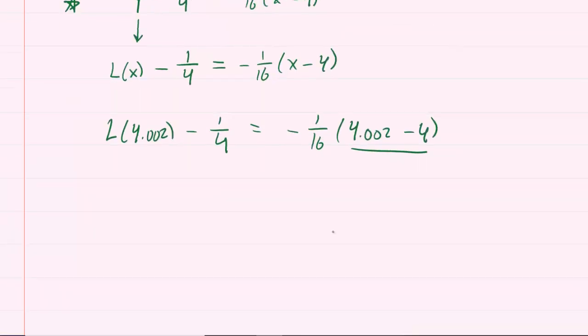Simplify what's inside of the parentheses next. So we'll have .002. Now we'll take out our calculators and we'll multiply the negative 1 sixteenth by the .002, minus 1 fourth.